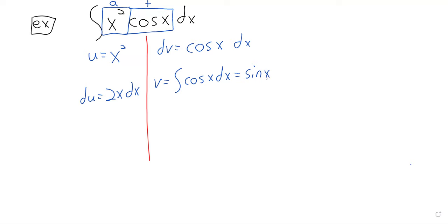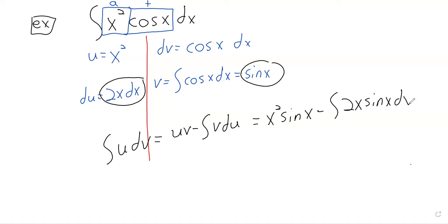And this u and this v and all this stuff is intended to let us use that formula. The integral of u dv is uv minus the integral of v du. In this case, x squared times the sine of x minus the integral of v du, 2x times the sine of x dx.